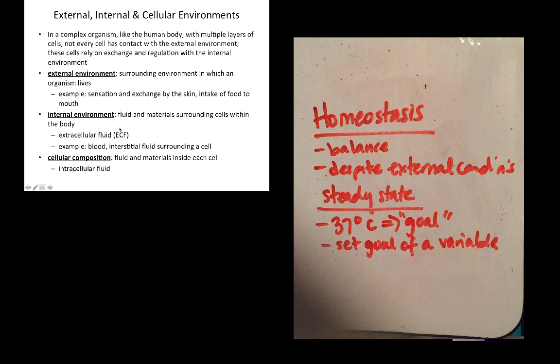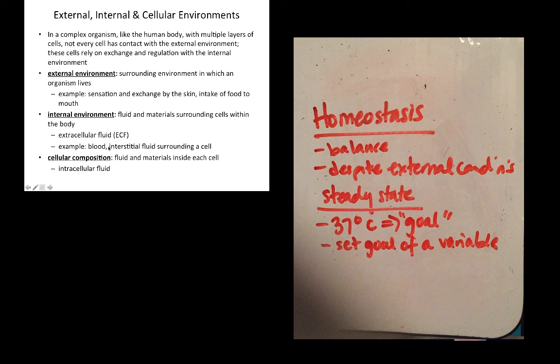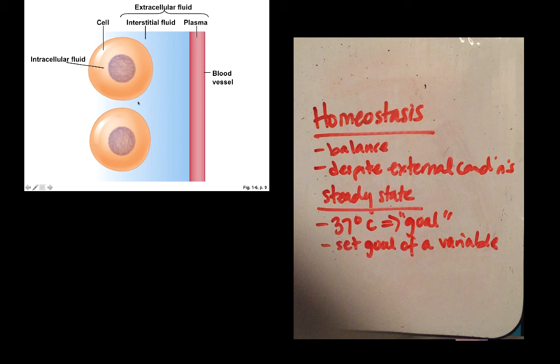The internal environment includes extracellular fluid, also called interstitial fluid — the fluid surrounding cells between them. There is also the fluid and materials inside the cells themselves. Think about what the outside looks like, what the temperature of the blood is as the fluid surrounding cells, and what temperature is maintained inside the cell — all three levels matter for homeostasis.